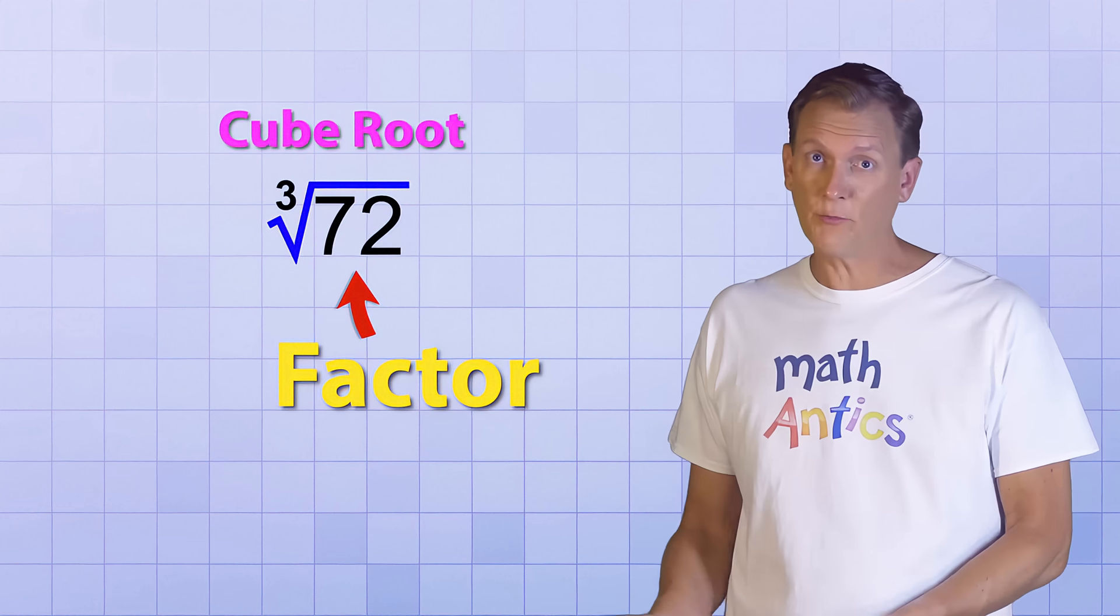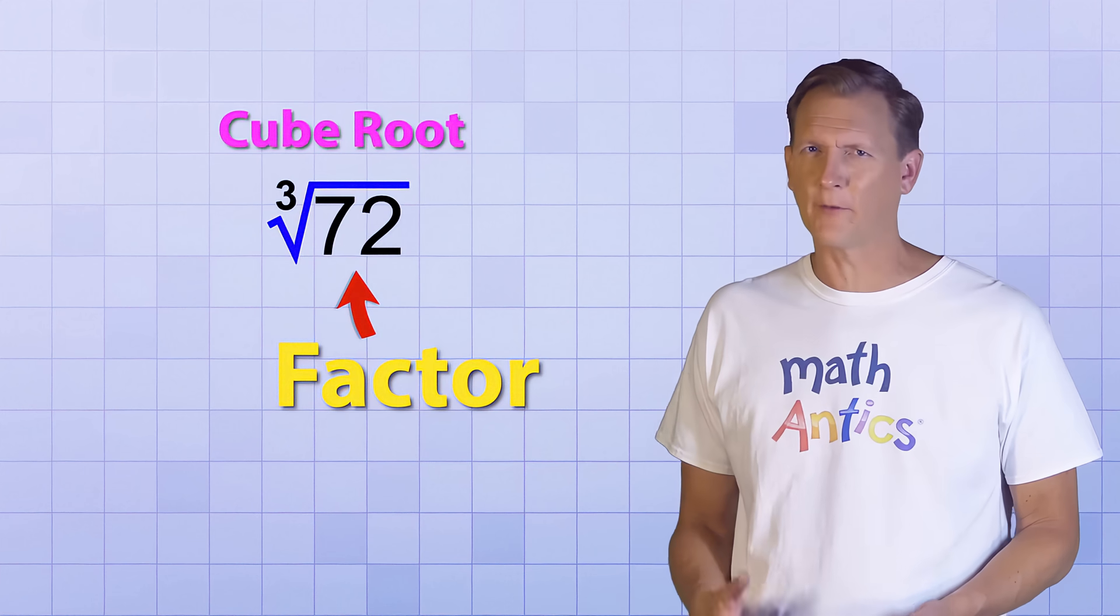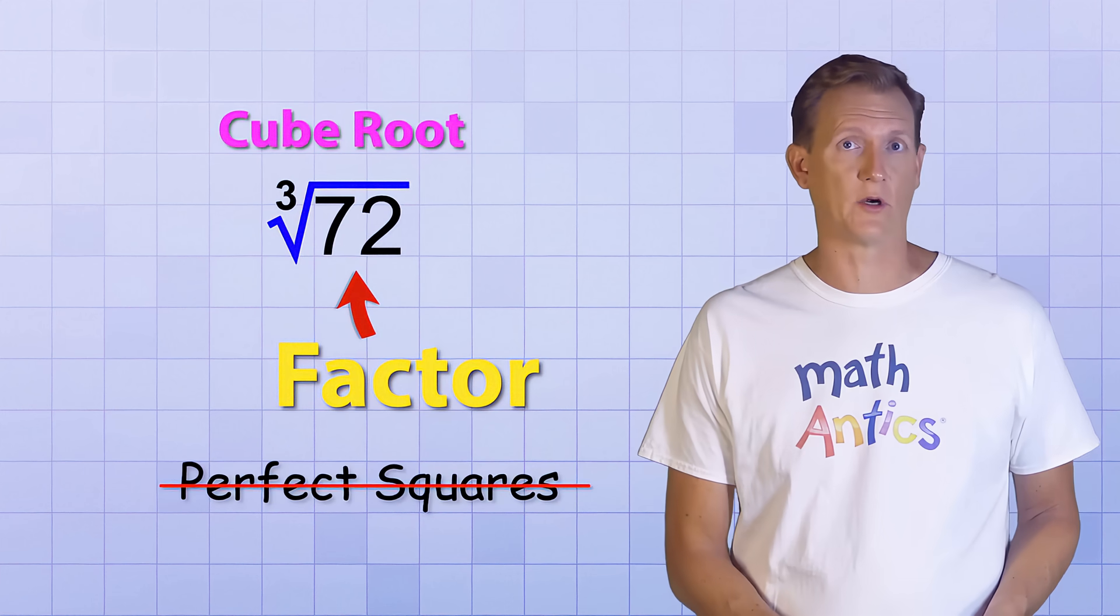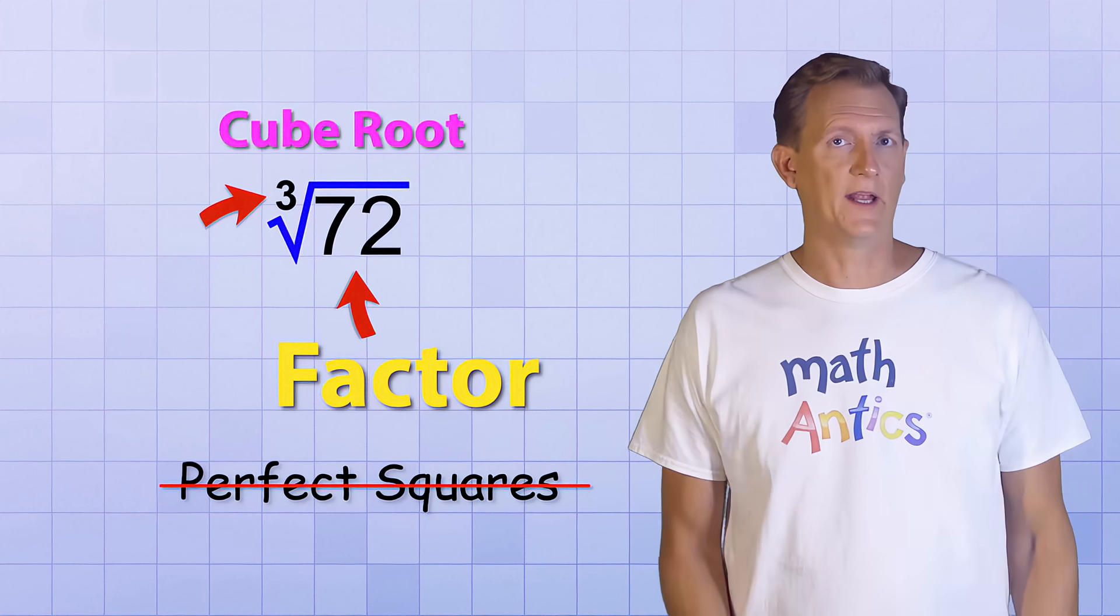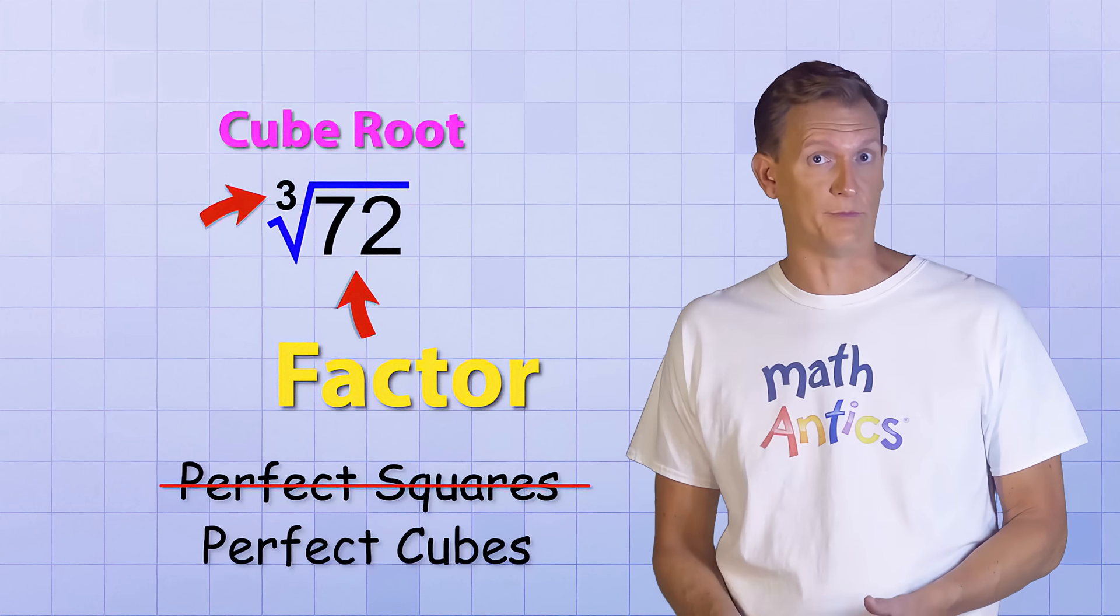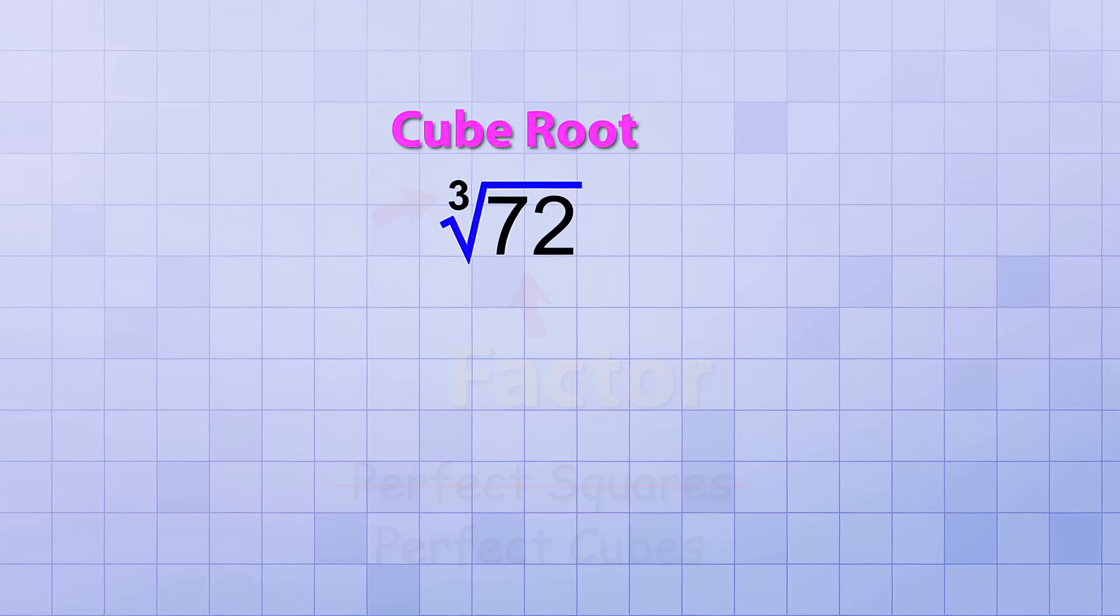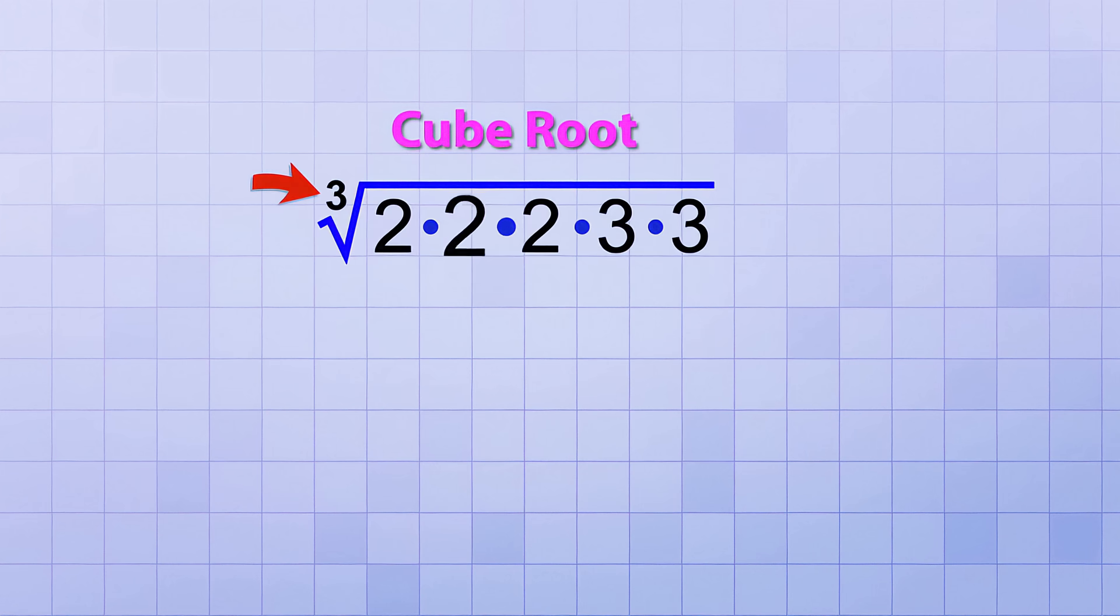But since we're working with a cube root this time, that means we aren't looking for pairs or perfect squares anymore. Instead, we need to find factors that are in groups of 3. In other words, we're looking for perfect cubes. Just like before, 72 factors down to 2 times 2 times 2 times 3 times 3. But since we're dealing with a cube root this time, the 2 times 2 times 2 can be simplified because it's a perfect cube. But the 3 times 3 can't because it's a perfect square.